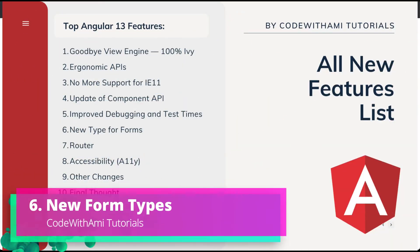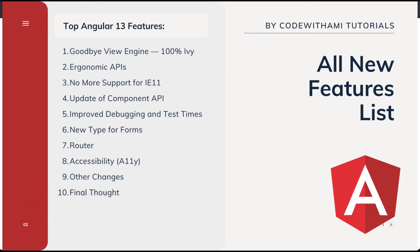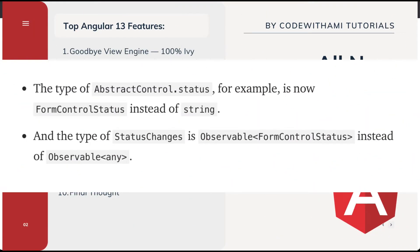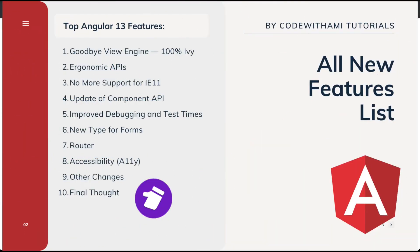The next feature is new types for forms. Angular 13 has introduced a new type called FormControlStatus, which is a union of all possible status strings for form controls. The type of AbstractControl.status is now FormControlStatus instead of a plain string, and the type of statusChanges is now Observable<FormControlStatus> instead of Observable<any>.